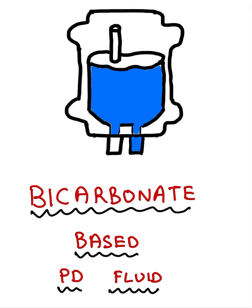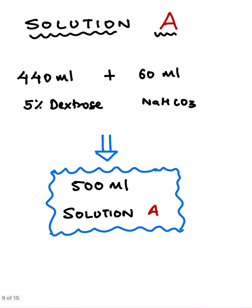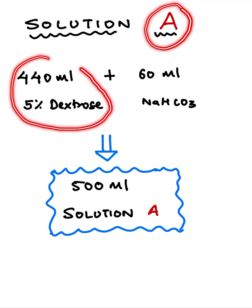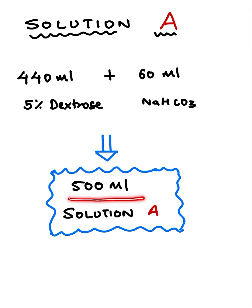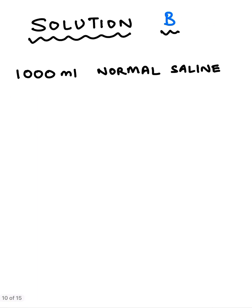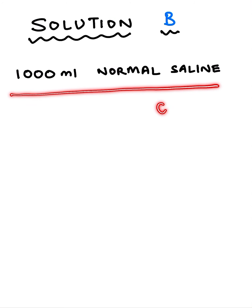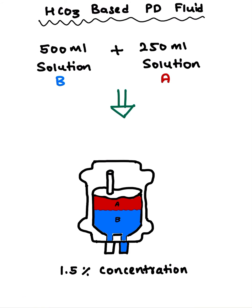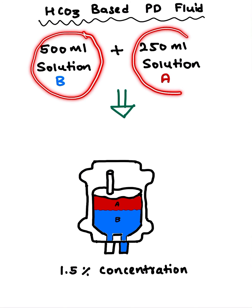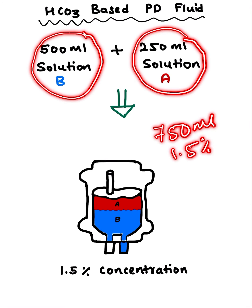So how do we prepare bicarbonate-based PD fluids? It's very simple. First, we prepare Solution A, which is composed of 440 ml of 5% dextrose and 60 ml of soda bicarb, making a 500 ml solution. Coming to Solution B: Solution B is 1000 ml of normal saline (0.9%). When we have to make the bicarbonate-based PD fluid, we add 500 ml of normal saline plus 250 ml of Solution A, giving us 750 ml of 1.5% PD fluid.